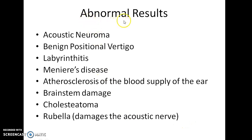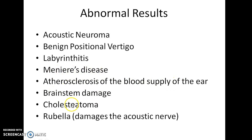Abnormal results of this test are seen in acoustic neuroma, benign positional vertigo, labyrinthitis, Meniere's disease, atherosclerosis of the blood supply of the ear, brain stem damage, cholesteatoma, and rubella. Rubella causes damage to the acoustic nerve.